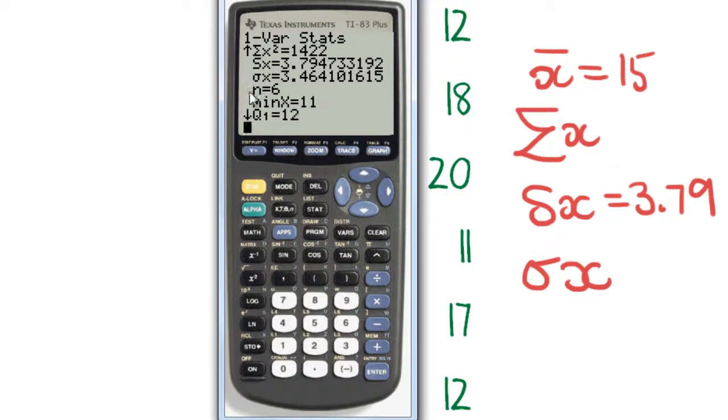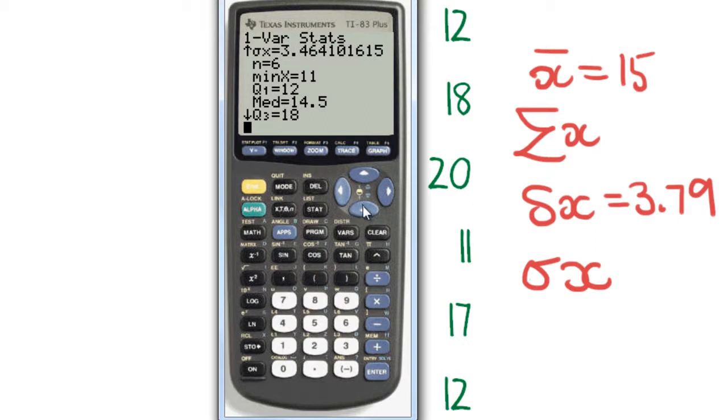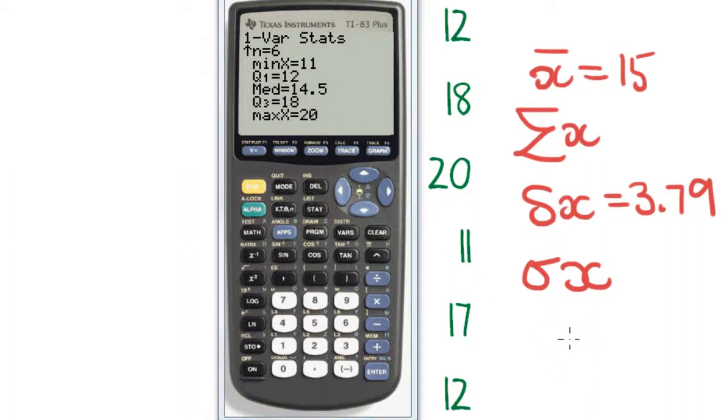If you scroll down, you get a few other data points. You can see n equals 6 there, which means the number of observations you have. So you can see we have six that we've entered here. That'll just count them up for you. And then you get the five-figure summary, which is very handy when you're plotting a box plot. That's the minimum, the Q1, the median, the Q3, and the maximum. So here we've got the median of 14.5.